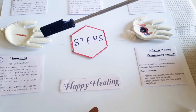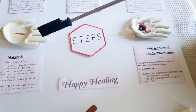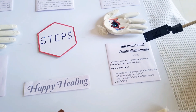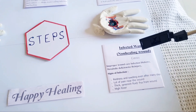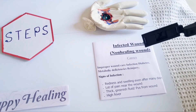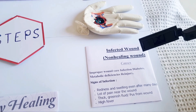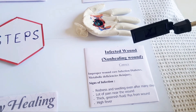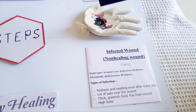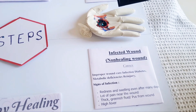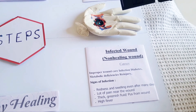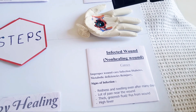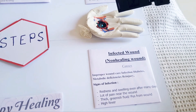If maturation is not done successfully, there may be infection in the wound. This is known as an infected or non-healing wound. This is caused by improper wound care, infection, diabetes, and other medical conditions. The signs of infection — as shown here — are swelling and a lot of pain near the wound. Thick greenish fluid, as shown in the model, will pass from the wound, and the patient may also suffer from high fever.